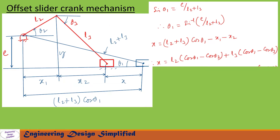To find the velocity of the slider, let us differentiate the displacement equation with respect to time. So v = dx/dt. Differentiation of cos(theta1) with respect to time is 0 since theta1 is constant. Differentiation of −cos(theta2) gives omega2·sin(theta2), and differentiation of −cos(theta3) gives omega3·sin(theta3). So the velocity of the slider is: v = l2·omega2·sin(theta2) + l3·omega3·sin(theta3).